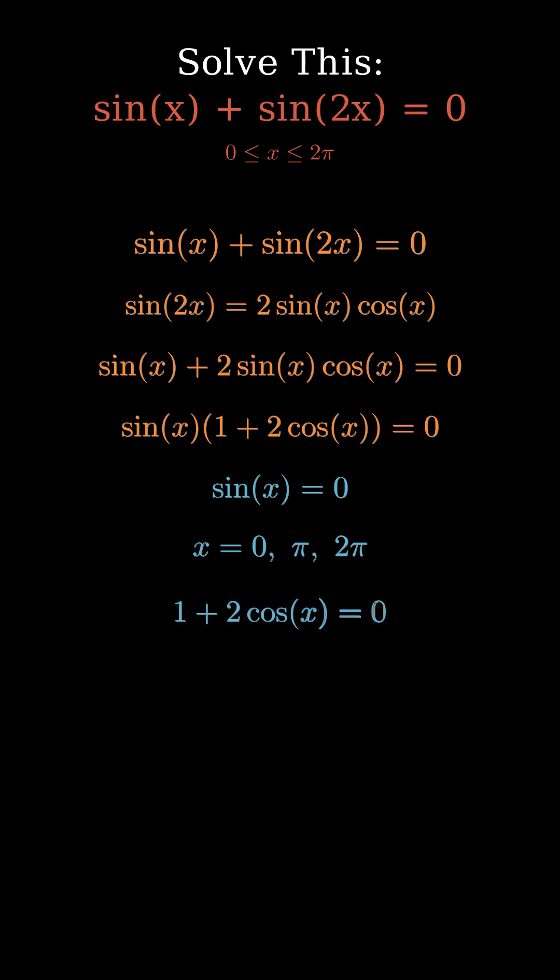Next, we solve the other factor, 1 plus 2 cosine x equals 0. We treat this like a simple algebraic equation.